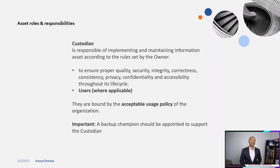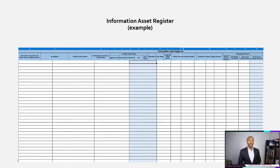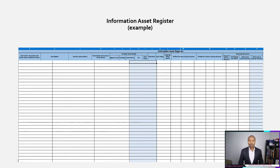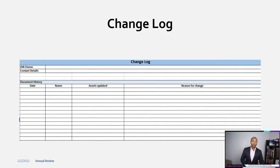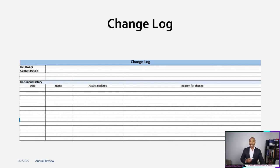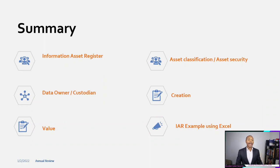You also have to select a backup champion who can support the custodian while doing the information asset registry. Here is an example of an information asset registry — it has all the different fields and columns needed to have a solid database of information assets. You also have to keep a log of all changes during the life cycle of the asset information registry, as that will help you.